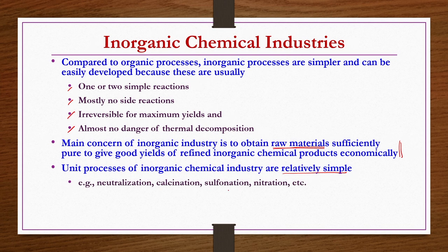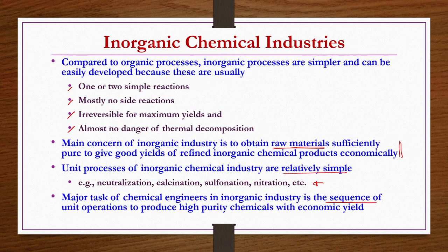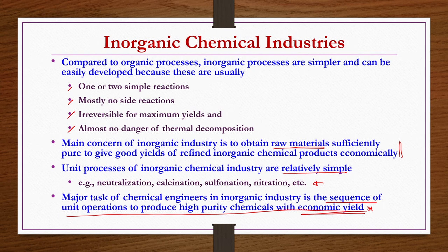Simple batch reactors or CSTR reactors can be used. The role of chemical engineers in inorganic chemical industry is to decide the sequence of unit operations to produce high purity chemicals with economic yield. Especially for India, there is a shortage of raw materials for the production of inorganic chemicals. For today's lecture on the sulfur industry, we will discuss the difficulty of availability of sulfur raw materials in India.